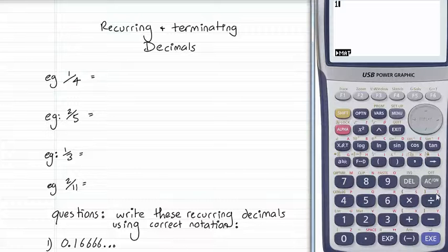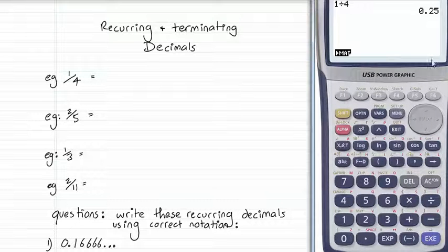On my calculator here, 1 divided by 4 equals 0.25.